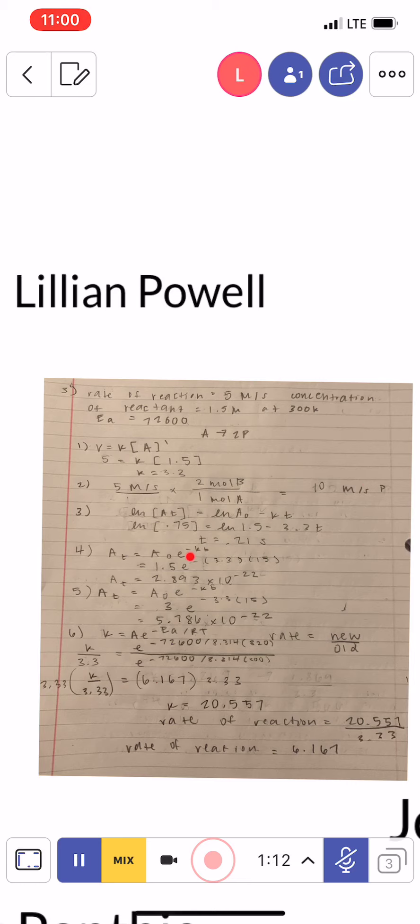we were supposed to find the half-life in seconds, so I used the integrated first order rate equation. That would be ln concentration over a certain time equals ln initial concentration minus K times time. And so I just plugged in all of the constants and information that I had to get T equals 0.21 seconds,